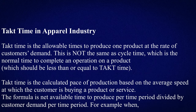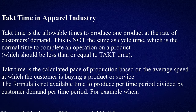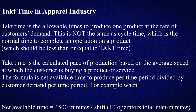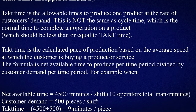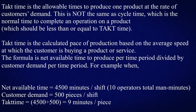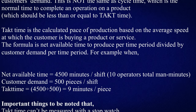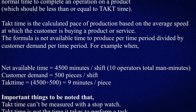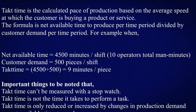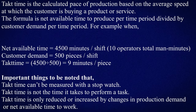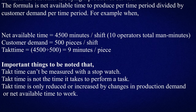Takt time is the calculated pace of production based on the average speed at which the customer is buying a product or service. The formula is: net available time to produce per time period divided by customer demand per time period. For example, when net available time equals 4500 minutes per shift with 10 operators total, and customer demand equals 500 pieces per shift...